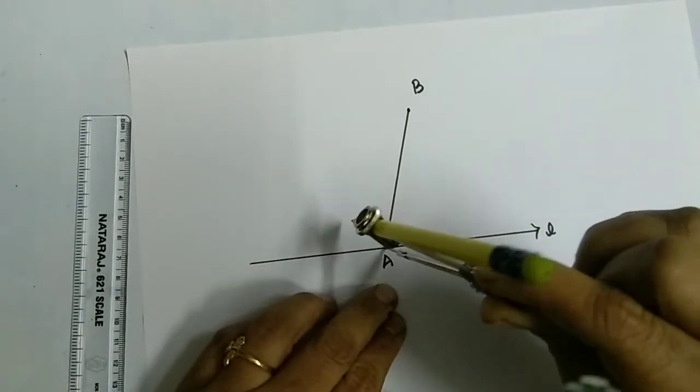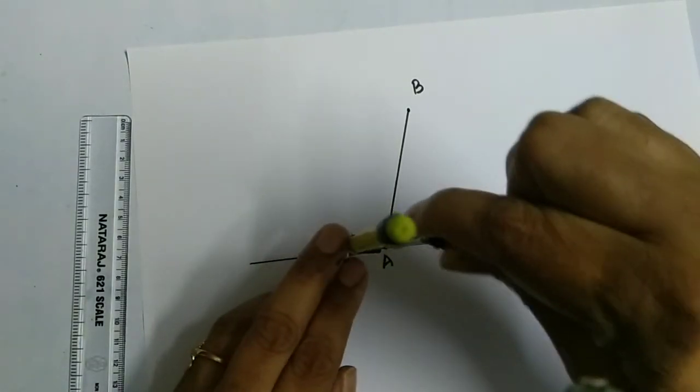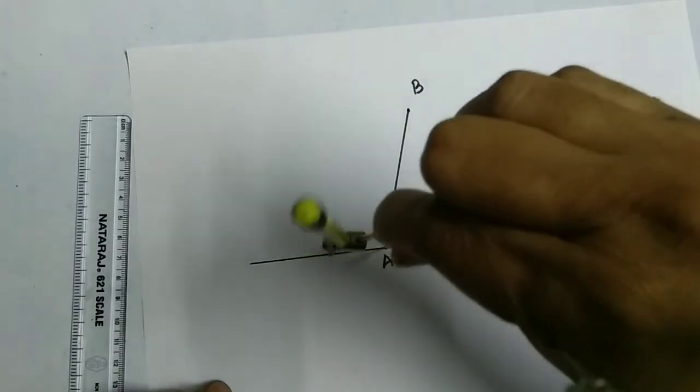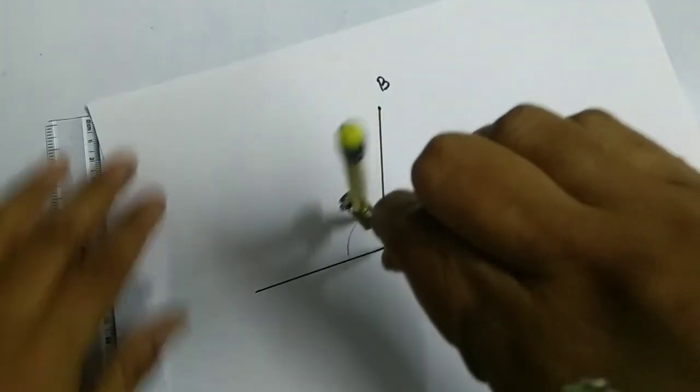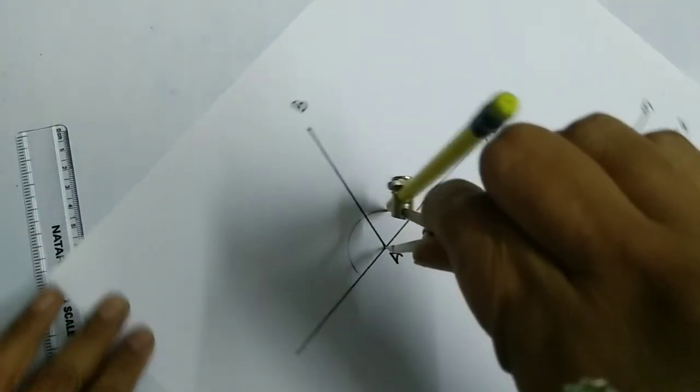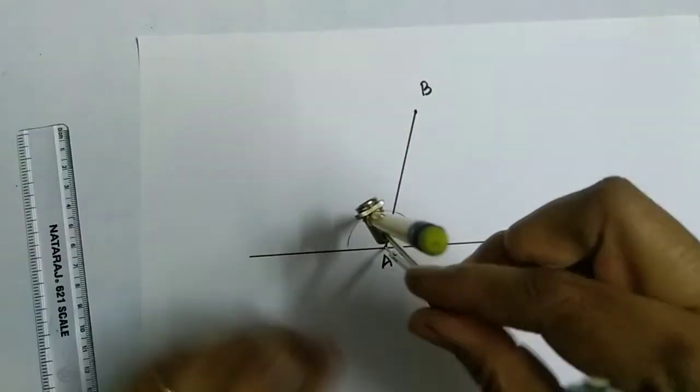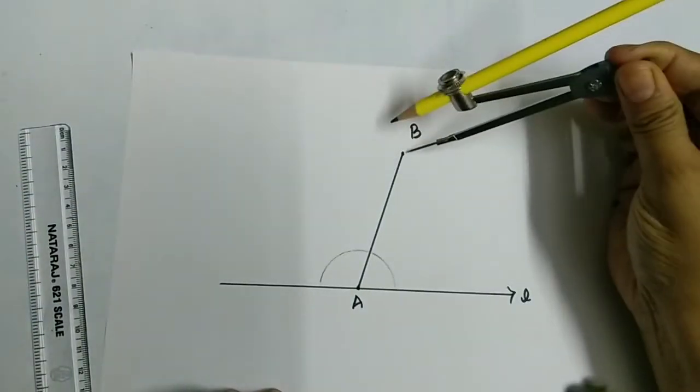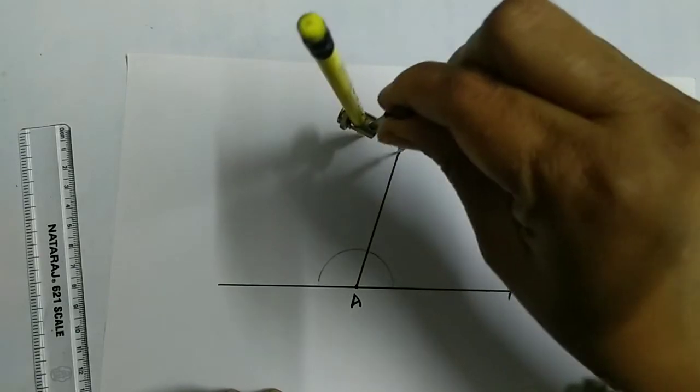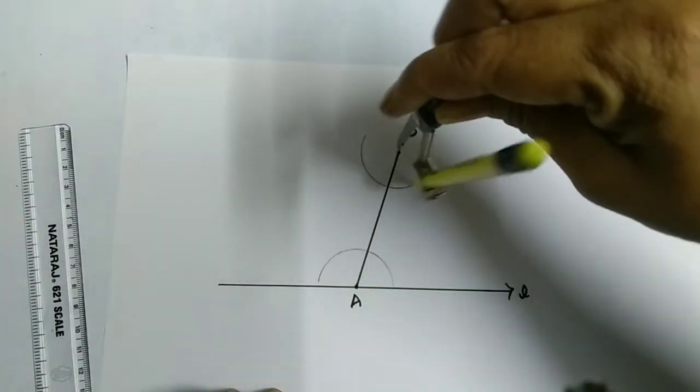All right, and the same thing you have to do here with point B. Just cut this arc like this.